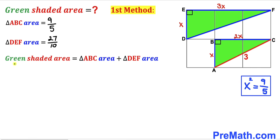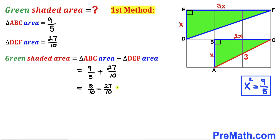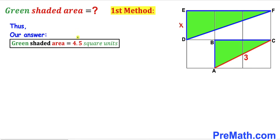Here is the final step for method one. The area of the green shaded region equals the area of triangle ABC plus the area of triangle DEF: 9/5 plus 27/10. Converting 9/5 to 18/10 and adding gives us 45/10, which equals 4.5 square units. So the area of the green shaded region turns out to be 4.5 square units using the first method.